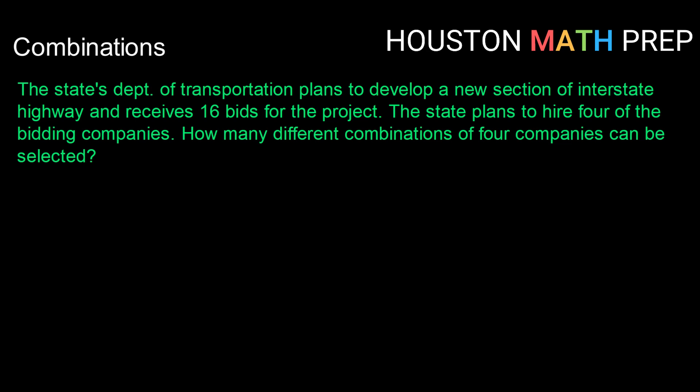So we have 16 items to choose from, or 16 companies to choose from. We're going to choose four of those items or four of those companies.